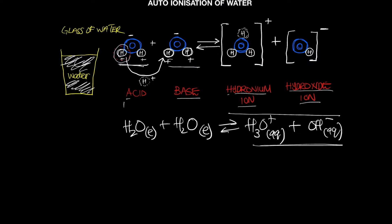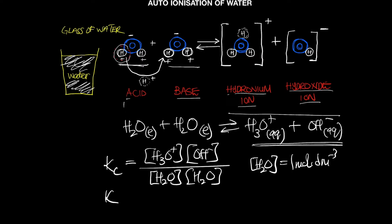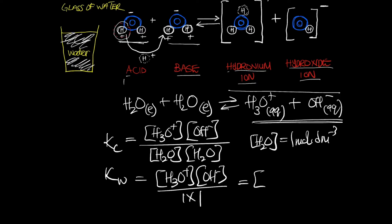Now let's look at the equilibrium constant for this, which we call Kc. The Kc expression is the concentration of hydronium multiplied by the concentration of hydroxide ion, divided by the concentration of water. Remember, in Kc the concentration of water is equal to one, so Kc becomes Kw — the equilibrium constant for the ionization of water — equal to the concentration of hydronium multiplied by the concentration of hydroxide, divided by one.